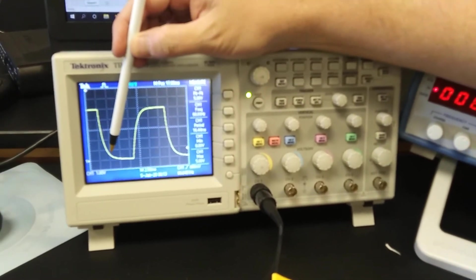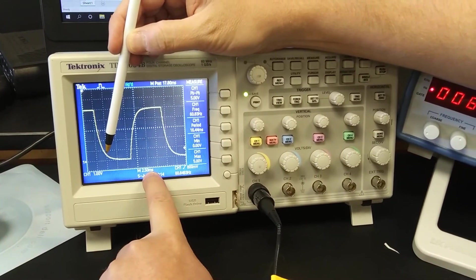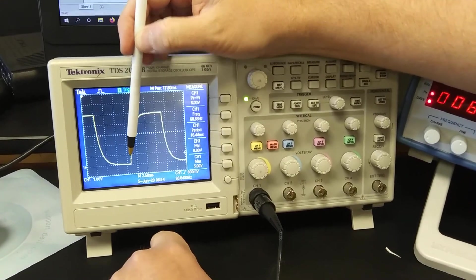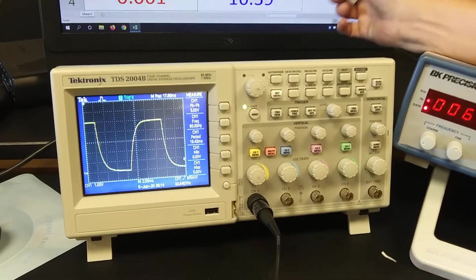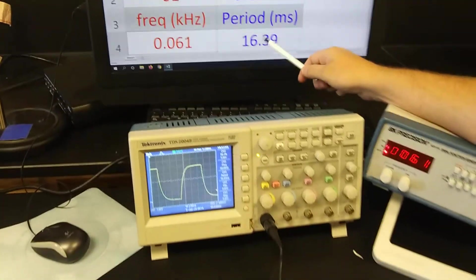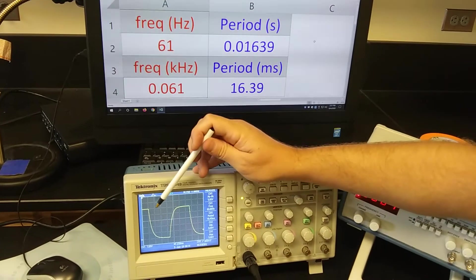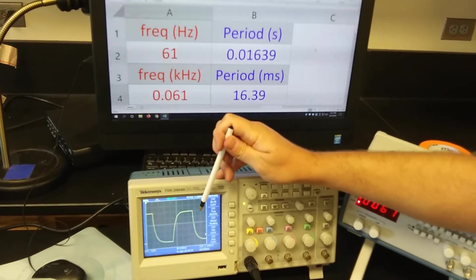And again, you can count the time. This would be one division of 2.5 milliseconds, two divisions of 2.5 milliseconds, three, etc. The period for this experiment was about 16 milliseconds. The period includes the time to discharge and charge once.